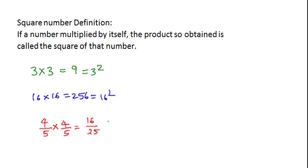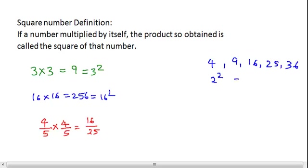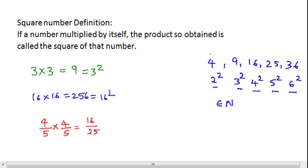A perfect square is a number that is a square of some natural number. So, 4, 9, 16, 25, and 36 are the squares of 2, 3, 4, 5, and 6 respectively. Since 2, 3, 4, 5, and 6 belong to natural numbers, 4, 9, 16, 25, and 36 are called perfect squares.